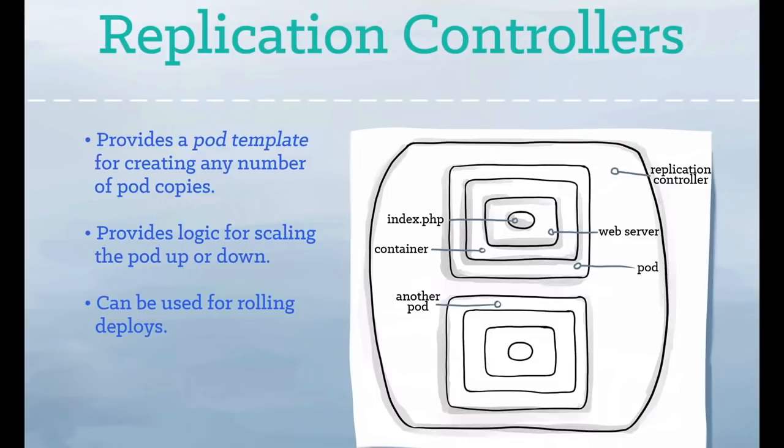Replication controllers provide a method for managing an arbitrary number of pods. A replication controller contains a pod template, which can be replicated any number of times. Through the replication controller, Kubernetes will manage your pod's lifecycle, including scaling up and down, rolling deployments, and monitoring.